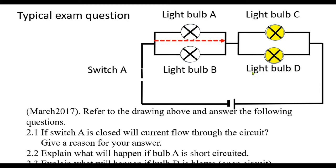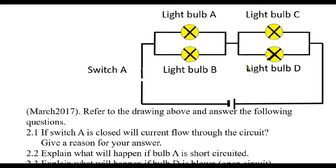Question 2.3 asks: explain what will happen if bulb D is blown. With all light bulbs currently working in a closed circuit, if bulb D is blown, we have an open circuit on that branch. Because we have an open circuit on that branch, electrons will not flow through there. But current can still flow through the top branch, so light bulb C will work, and current still flows through light bulbs A and B. Therefore, light bulb D will not work, but light bulbs A, B, and C will still come on because they are still working within parallel branches.